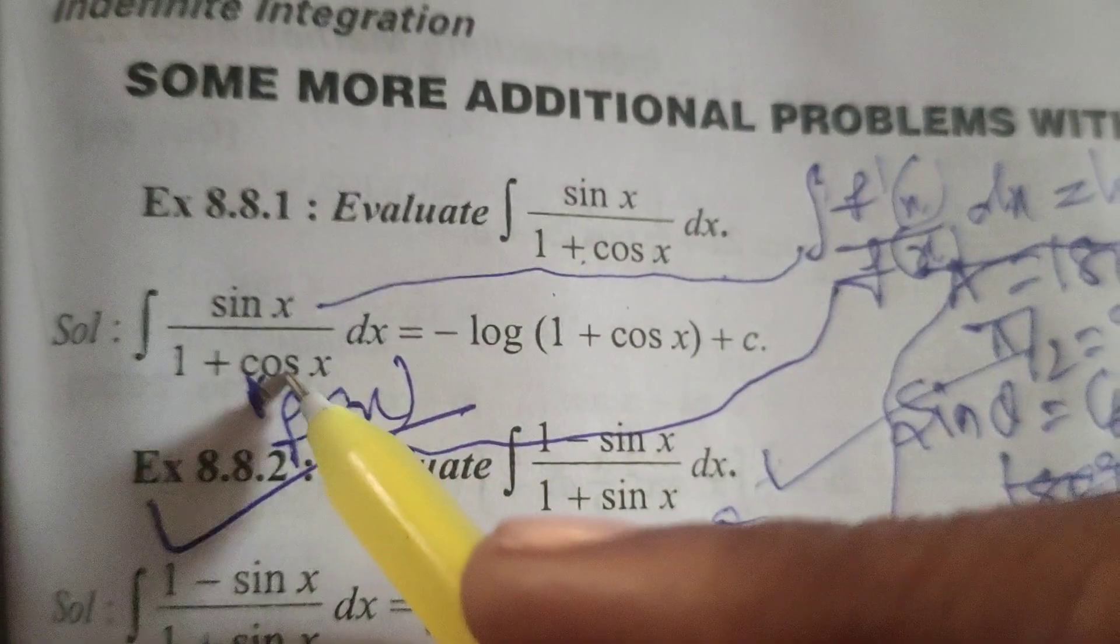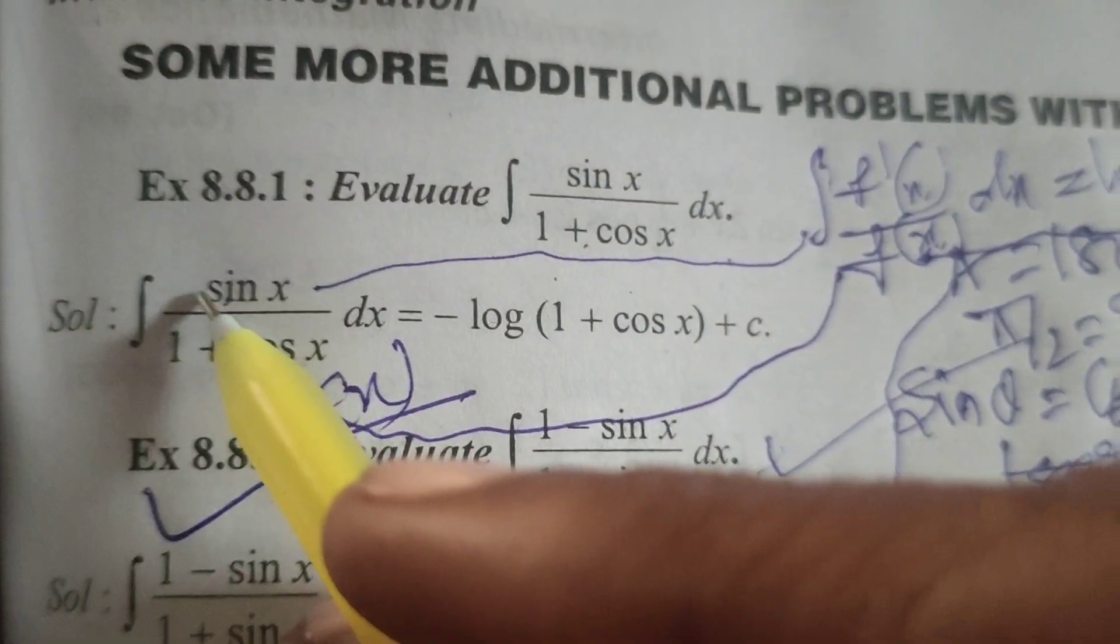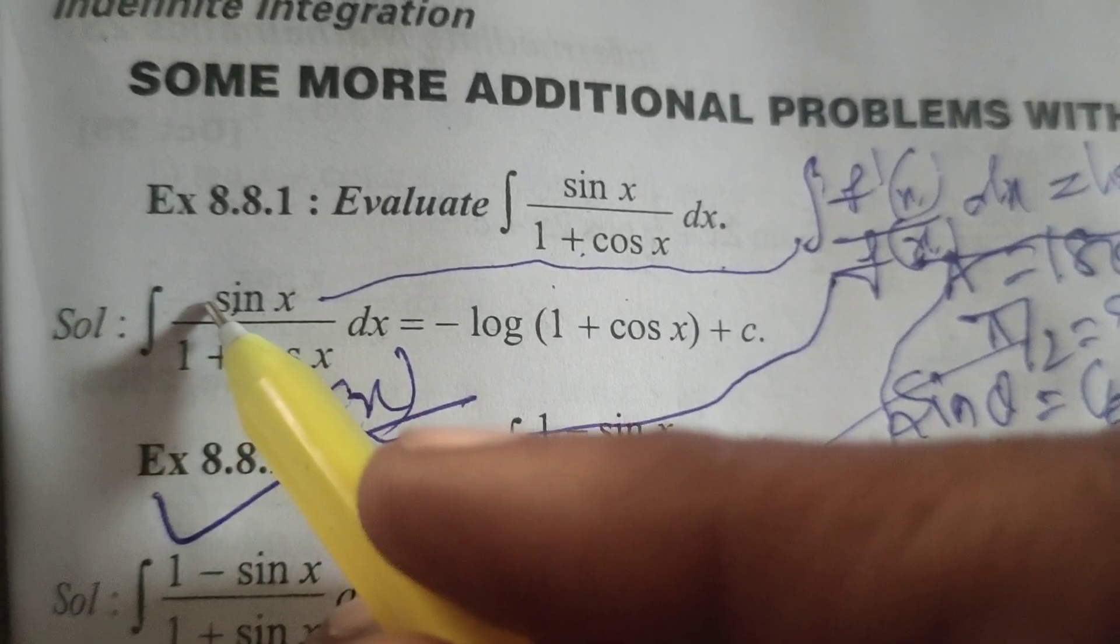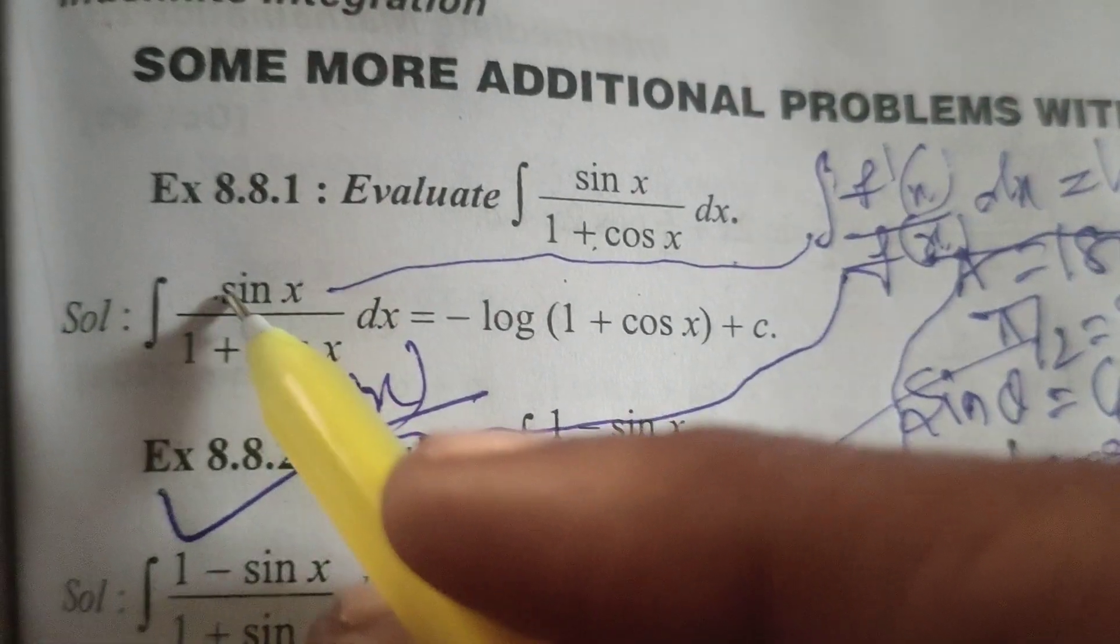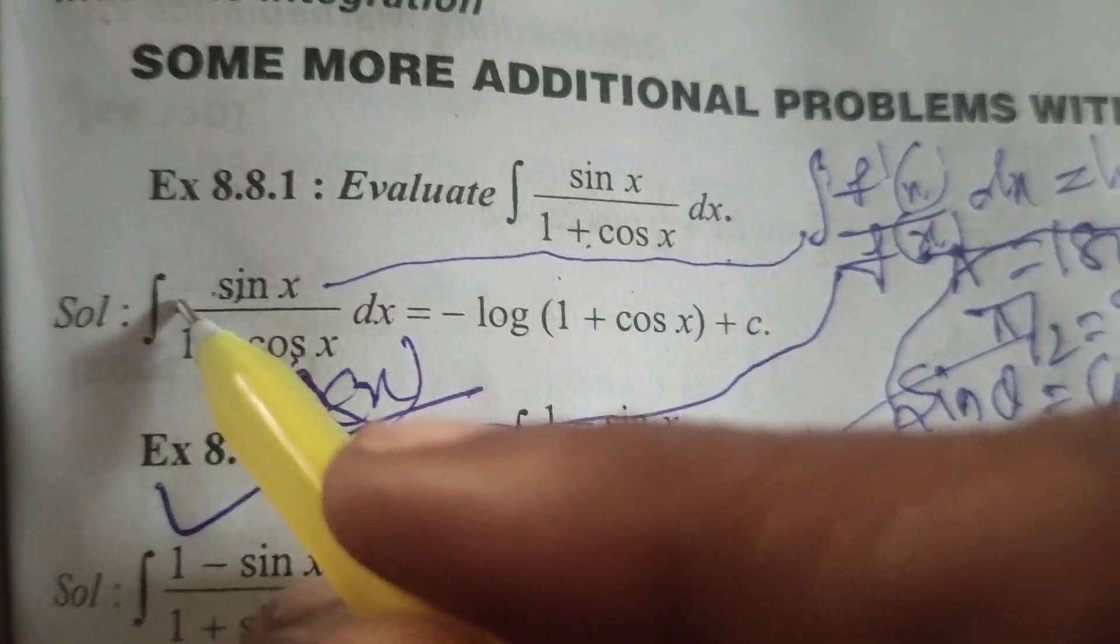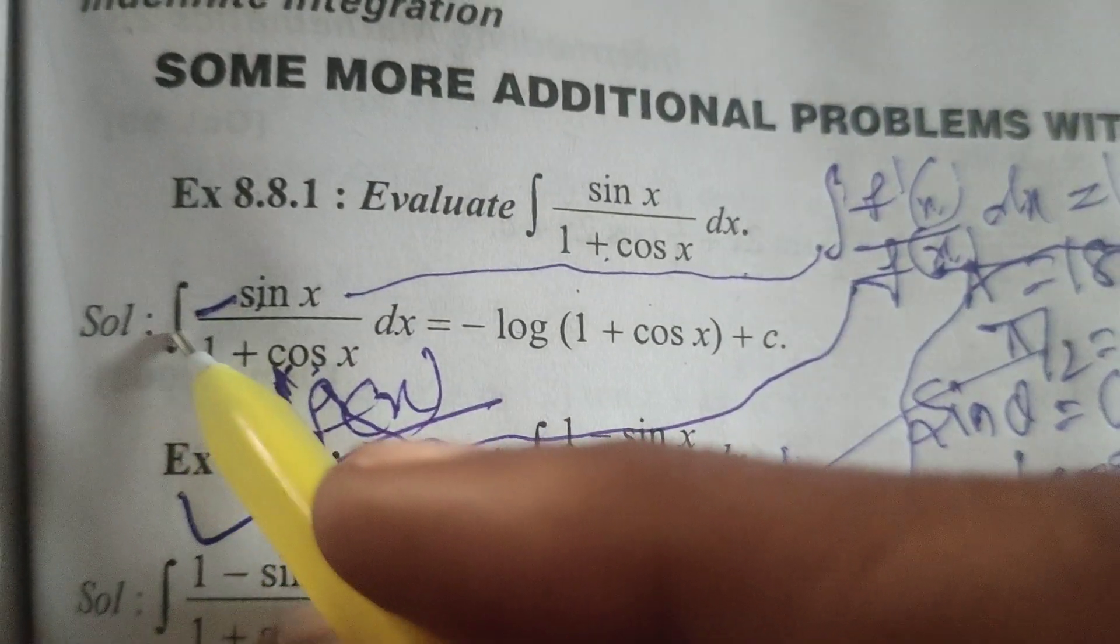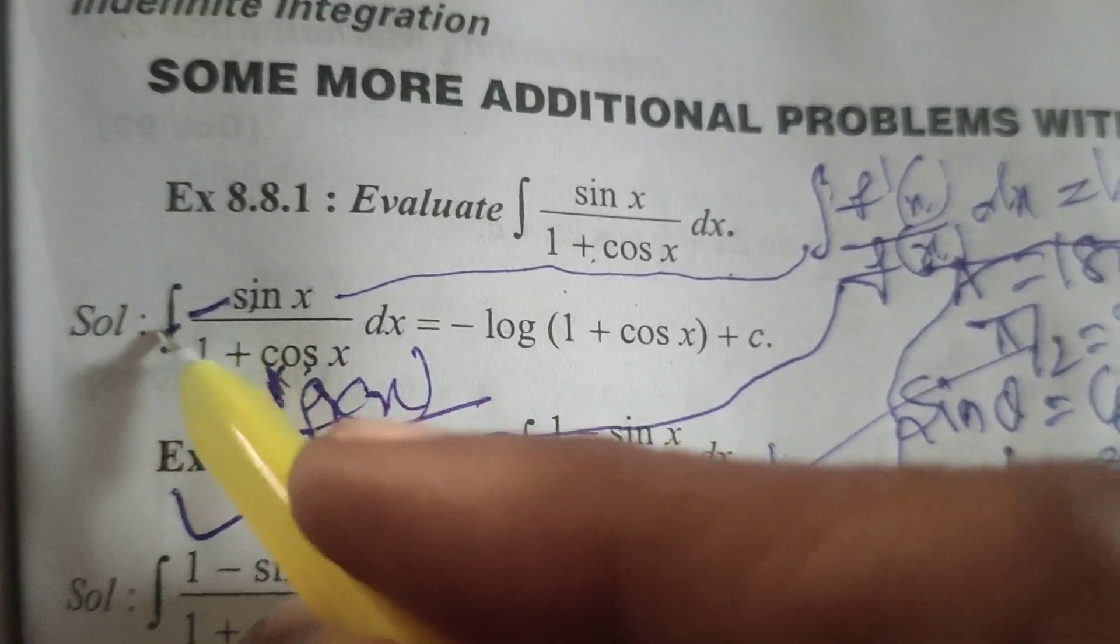Differentiate this. Cos x means minus sin x. So here cos x differentiates to minus sin x, but here there is no minus. So, we multiply and divide by minus here.